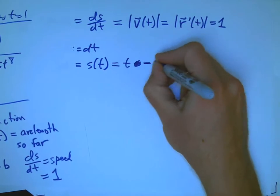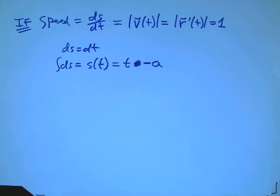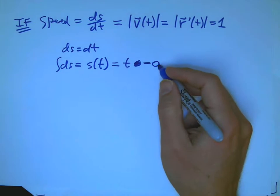And so I don't have to put in some random plus c. I can actually put in t minus a. But the main thing is that they differ only by a constant. So that's really nice.